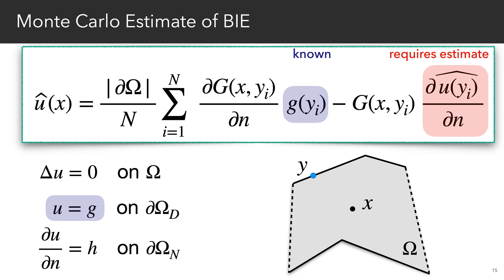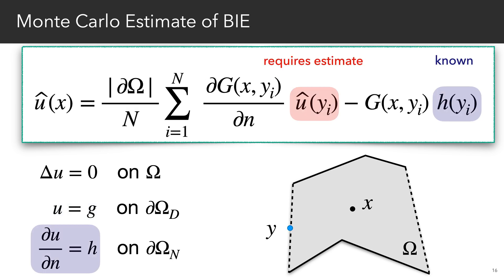Boundary samples that are on the Dirichlet part of the boundary can directly use the known Dirichlet values, but require estimation of the unknown Neumann values. Boundary samples that are on the Neumann part of the boundary can directly use the known Neumann values and require estimation of the unknown Dirichlet values.